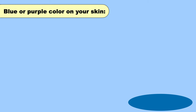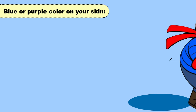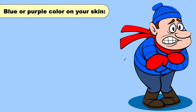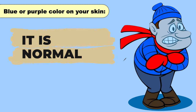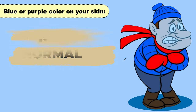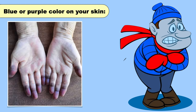The next important sign is blue or purple color on your skin. When you are extremely cold, your skin can turn blue or purple and it is normal. But if an area of your skin is blue or purple when you are warm, that can be a sign that your blood isn't getting enough oxygen.